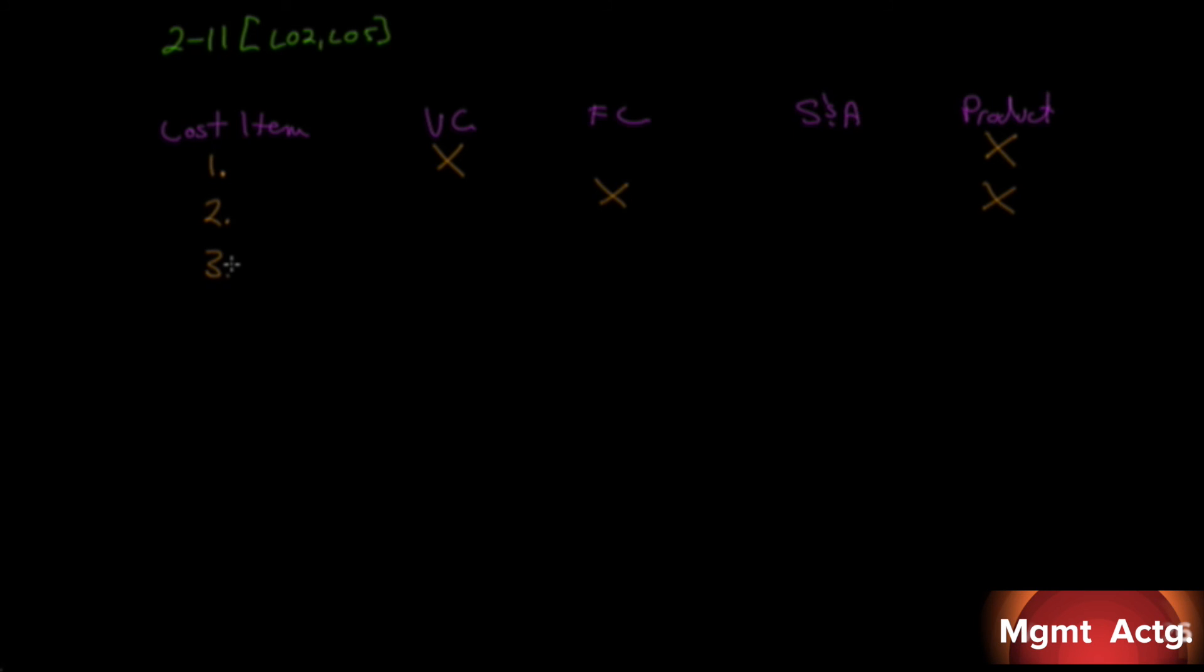Number three: salesperson's commissions at Avon Products, a company that sells cosmetics door-to-door. Well, we know that a commission on sales, like 6% of sales, is variable. If you don't sell anything, you don't get paid anything. If you sell a lot, you get paid a lot. So the commissions would be a variable cost, but it would be a selling and administrative cost.